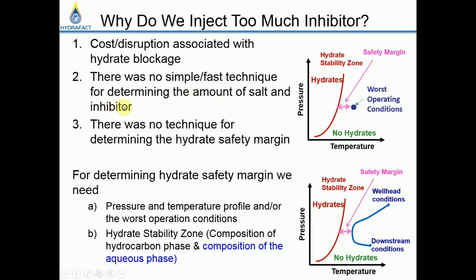Most techniques for determining salt and inhibitor concentration are time-consuming and require relatively well-equipped laboratories — so by the time results are available, the system condition may have changed. There is also a general belief that a bit of extra inhibitor does no harm, and the cost is small when the oil price is high. Ideally, we want to operate outside the hydrate stability zone, but there was no practical technique for determining hydrate safety margin.